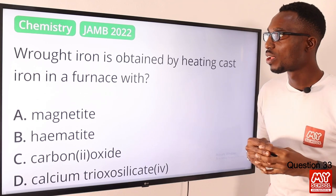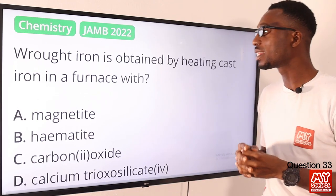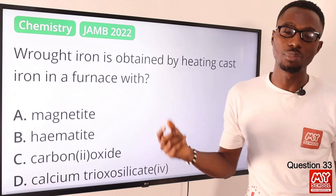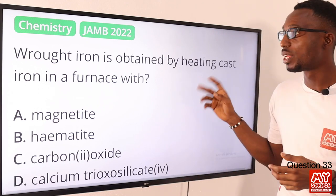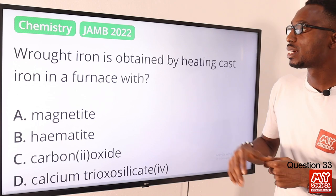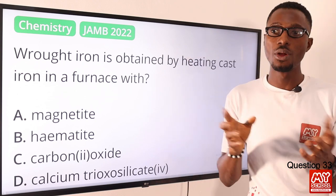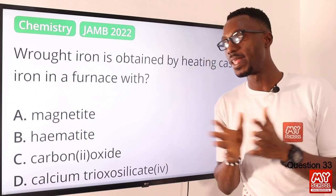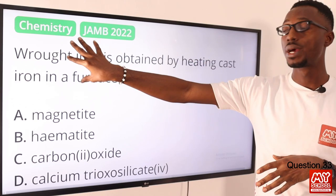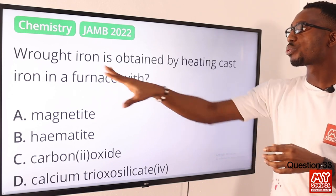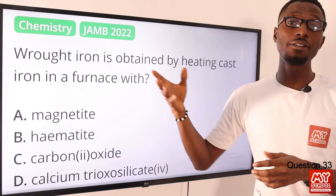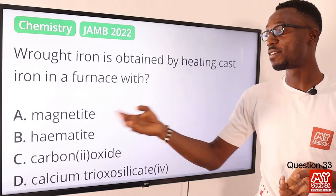Question 33. Wrought iron is obtained by heating cast iron in a furnace with what? If you look at the three types of iron: you have your pig iron, which contains a good amount of impurities; then your cast iron, which is used for things like cookers, stoves, and radiators; then your wrought iron, which is the purest form — the amount of carbon is about 0.1%. So how do we get wrought iron from cast iron? All you need to do is react it with hematite — Fe₂O₃. So the correct option is option B for hematite.